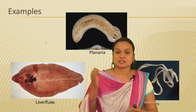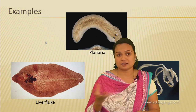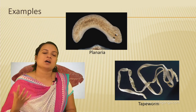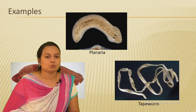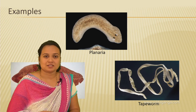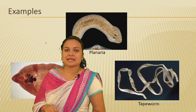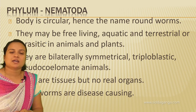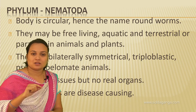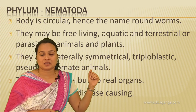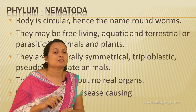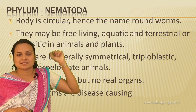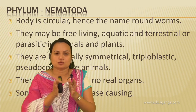So in exams, remember: the disease caused by Wuchereria is elephantiasis, and the disease caused by Ascaris is ascariasis. The general characters of Nematoda: body is circular, some are aquatic, terrestrial, free swimming, or parasitic; body is bilaterally symmetrical, triploblastic, and pseudocoelomate; they have tissues but no real organs; and some are disease-causing organisms.